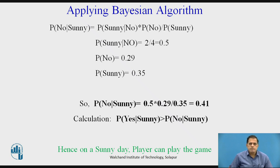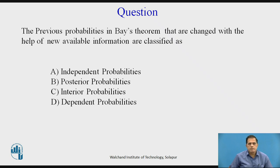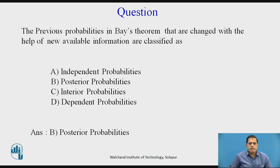After discussing all these things, here is a small question based on Bayesian algorithms: 'The previous probabilities in Bayes theorem that are changed with the help of new available information are classified as?' Options: A. Independent probabilities, B. Posterior probabilities, C. Interior probabilities, D. Dependent probabilities. The answer is B — Posterior probabilities — because posterior probabilities are the ones that are changed with the help of new available information, not independent probabilities.